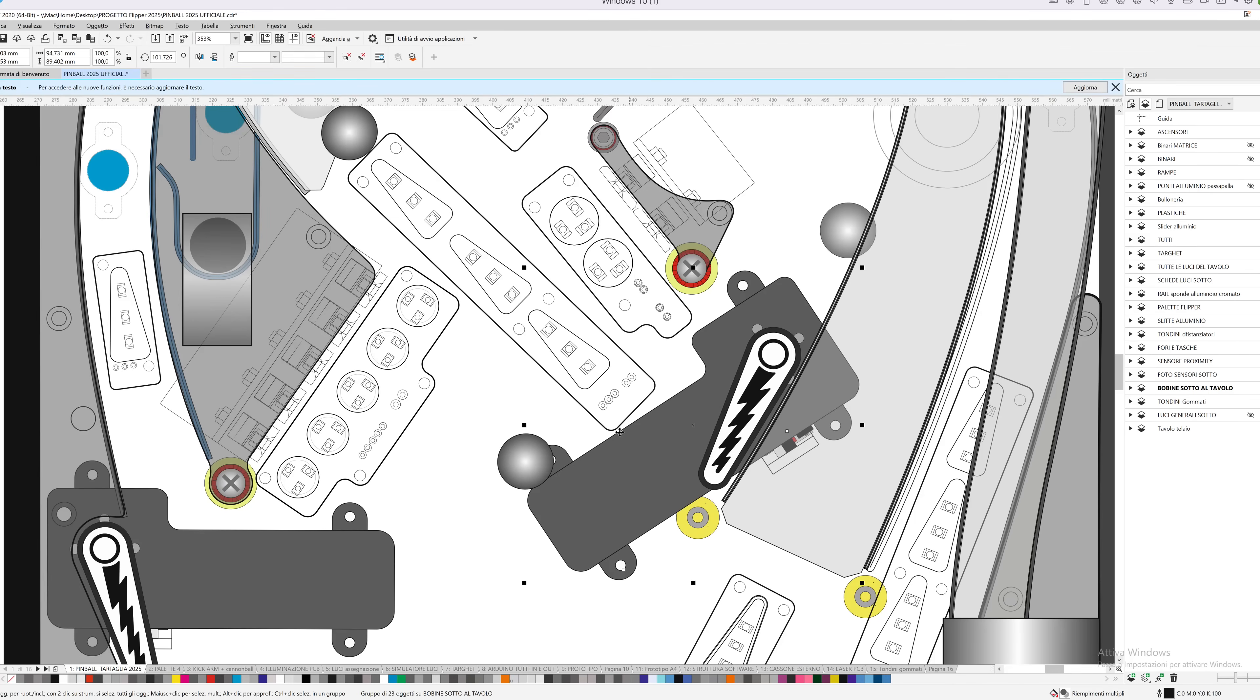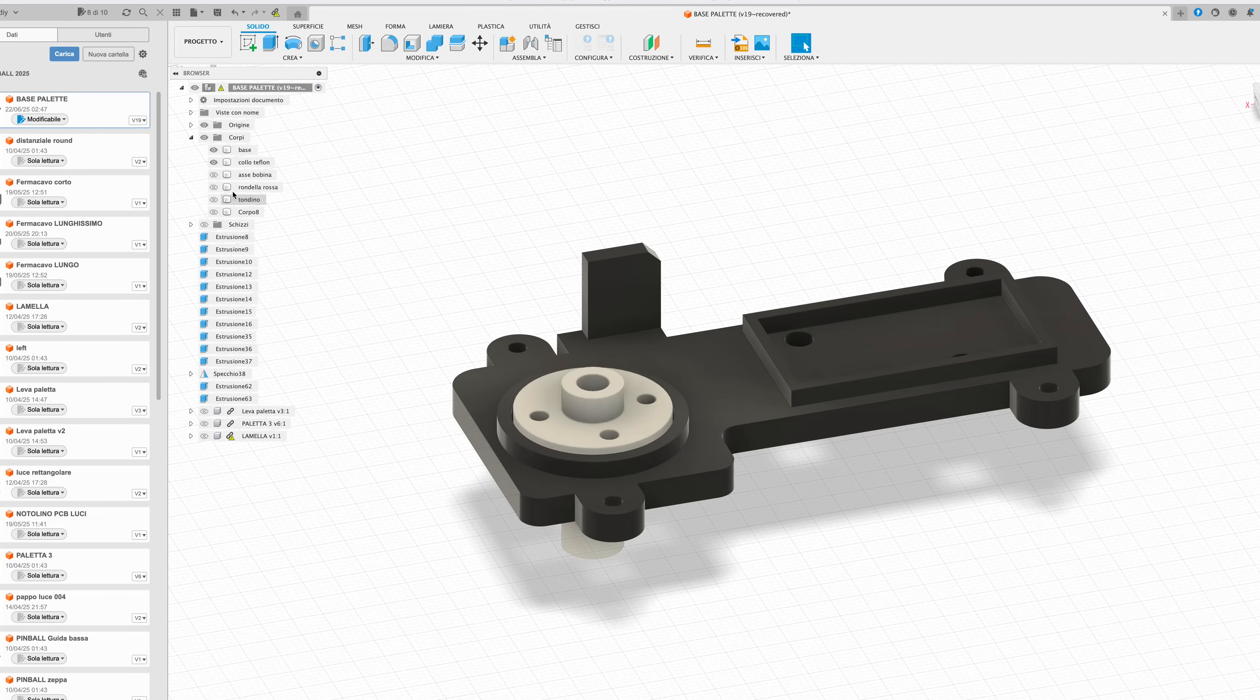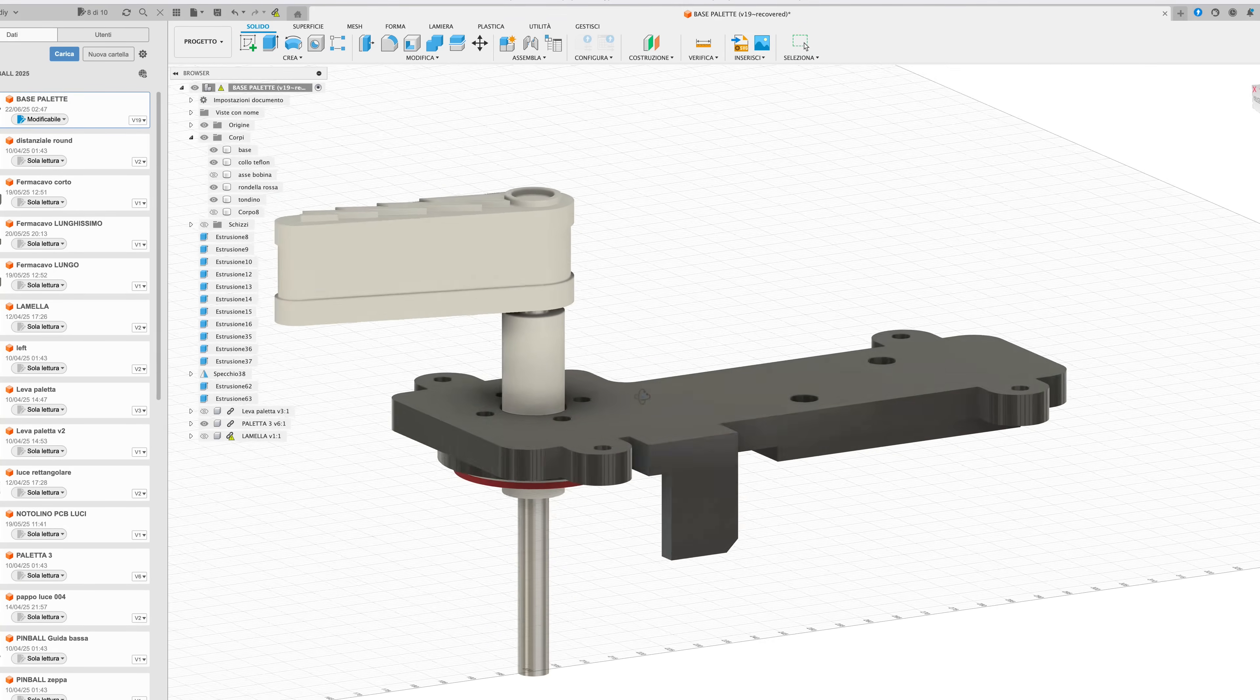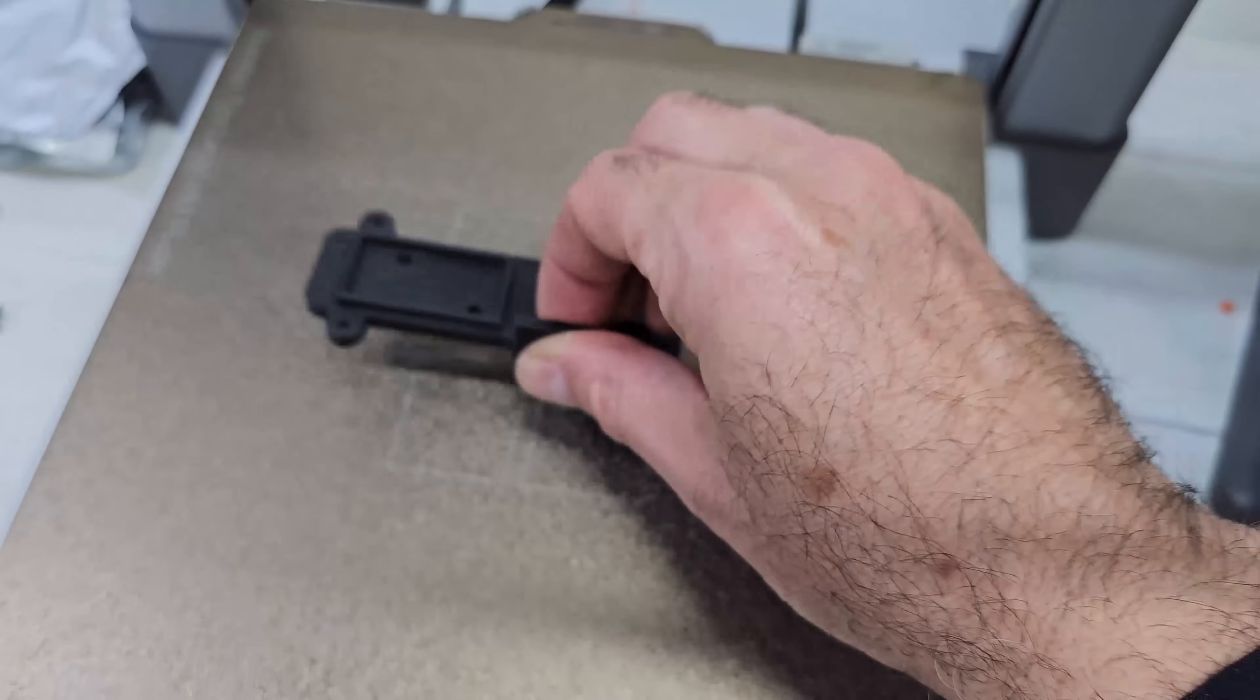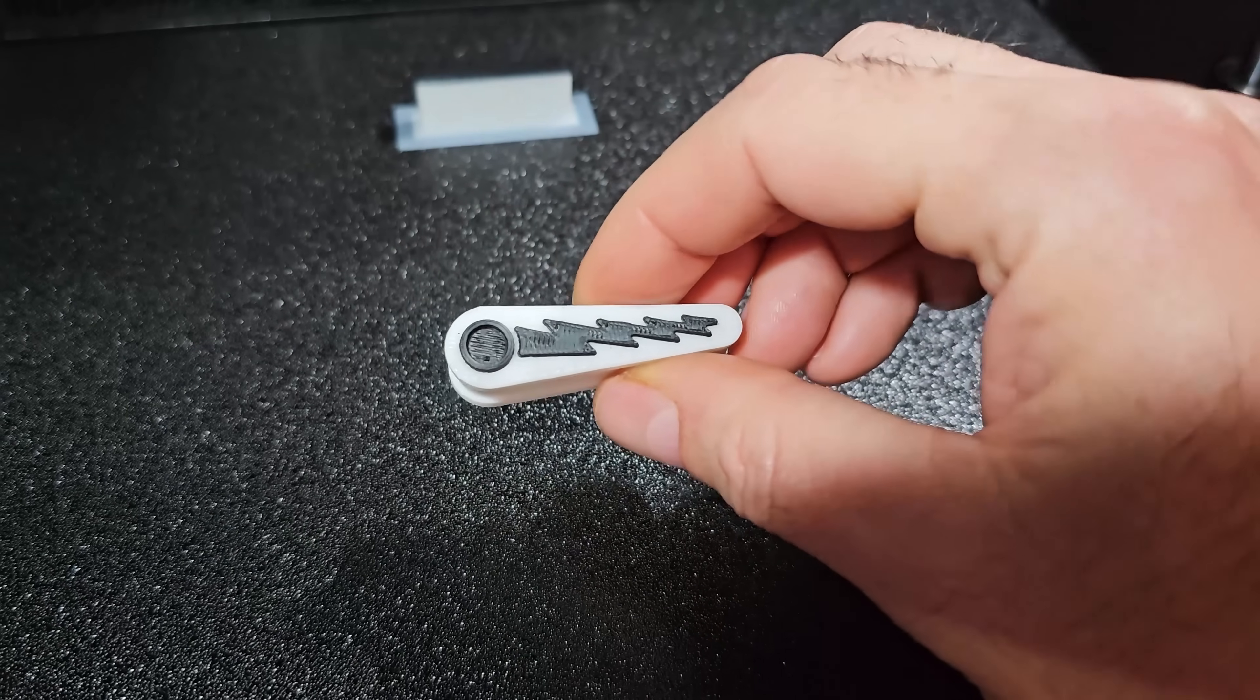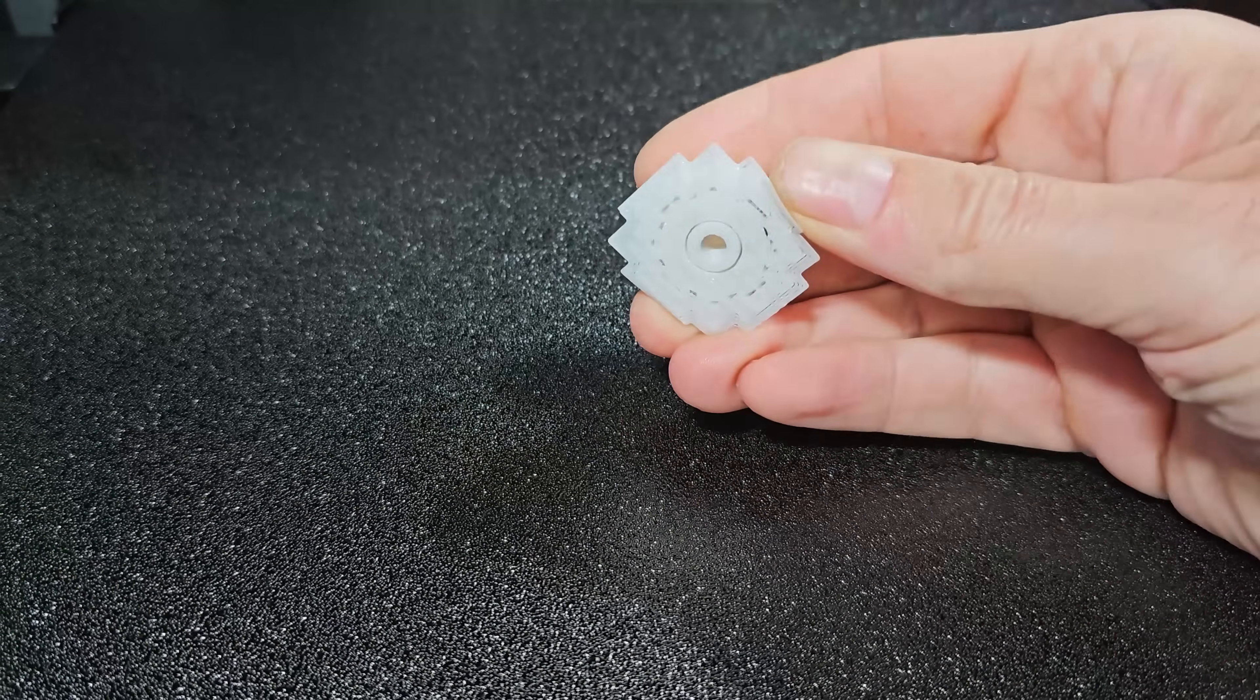The entire 3D base you're about to see started as a 2D drawing I made in Coral Draw, then extruded in Fusion 360. I began with the base, then added a bushing with a red wheel for the locking screws. Through it runs a 5mm steel rod. On one side there's the flipper bat, and below there's the lever arm with its connecting plate. The solenoid plunger pushes this whole system. I printed the base in matte black resin, and the result was excellent.